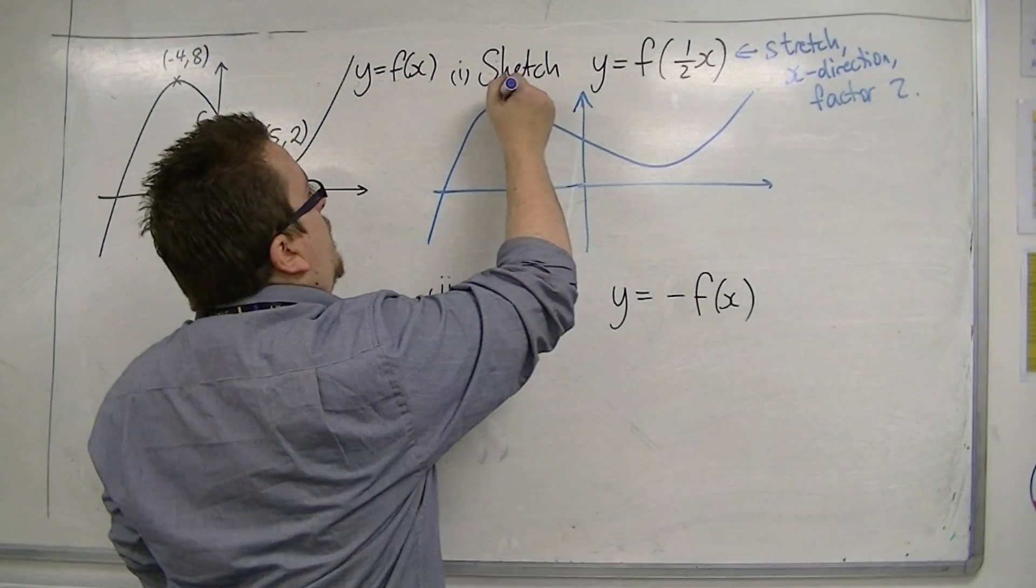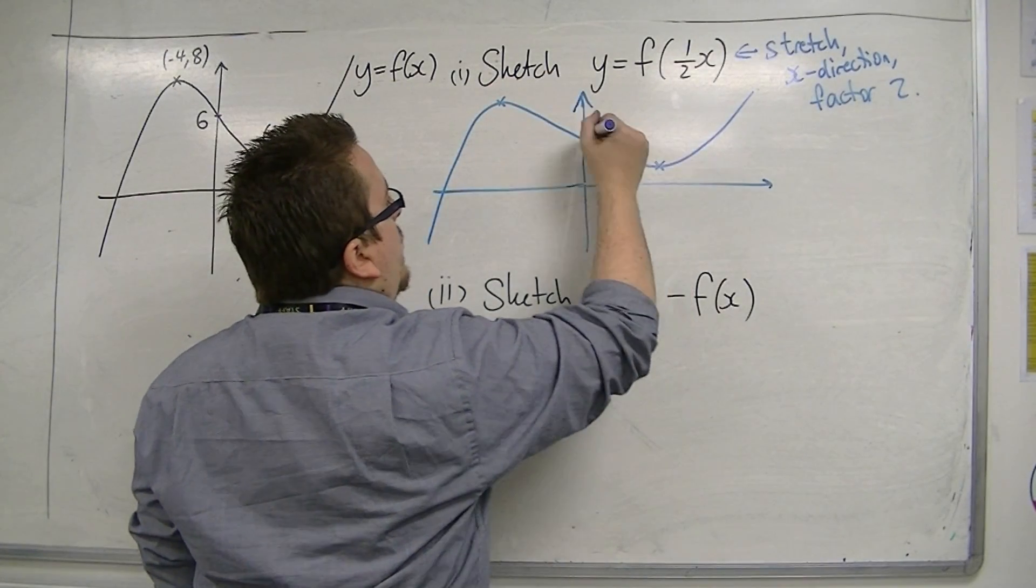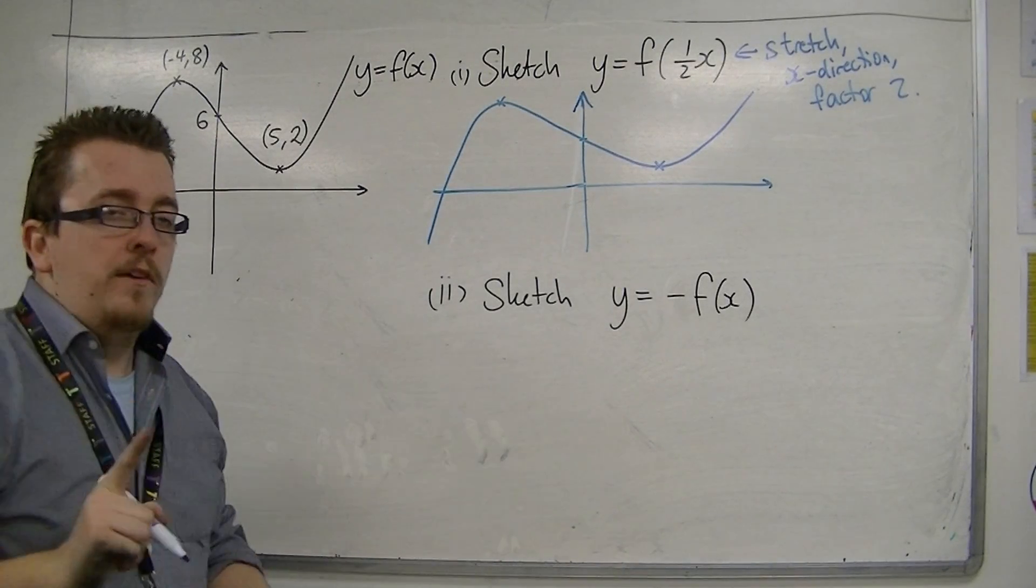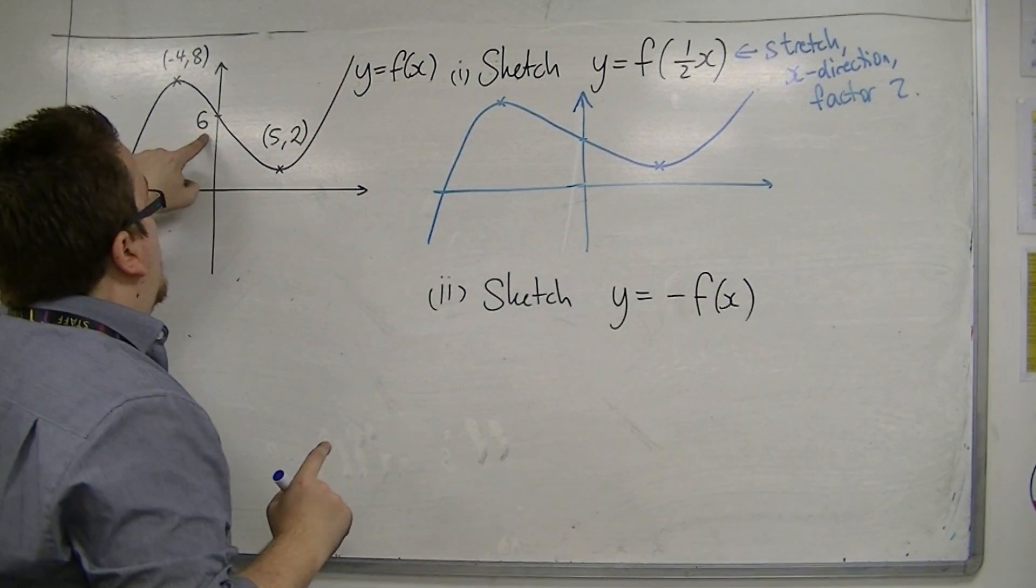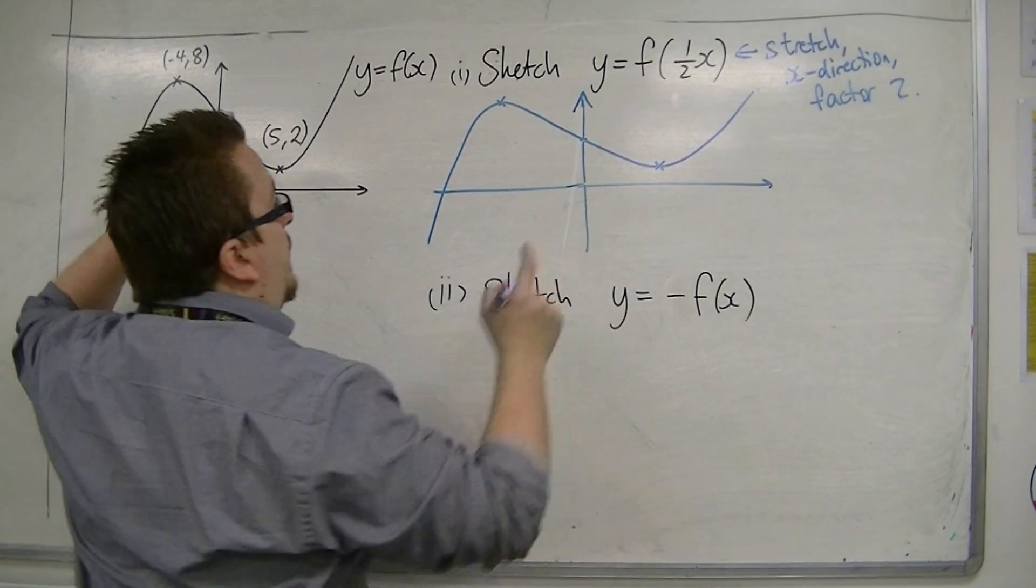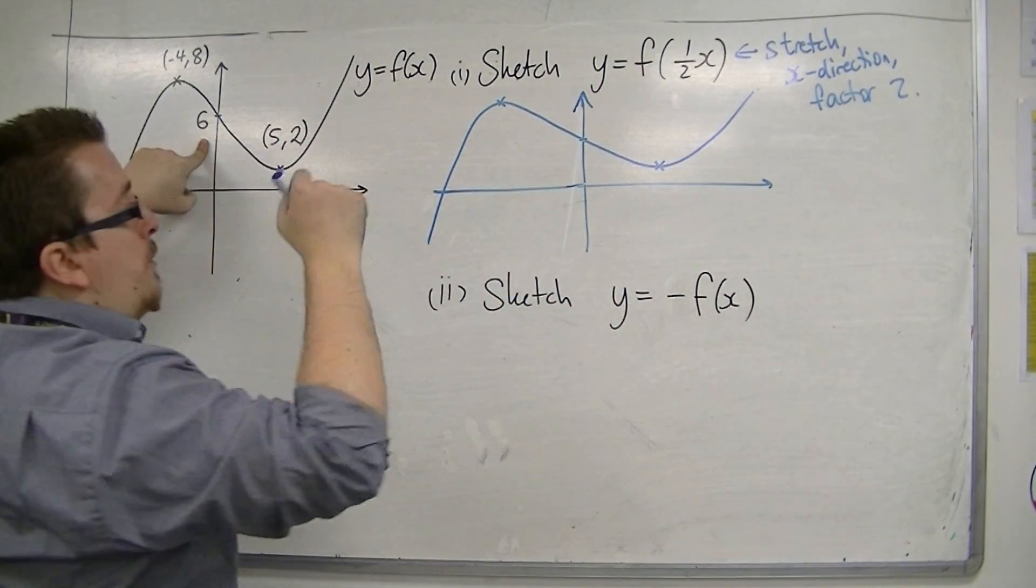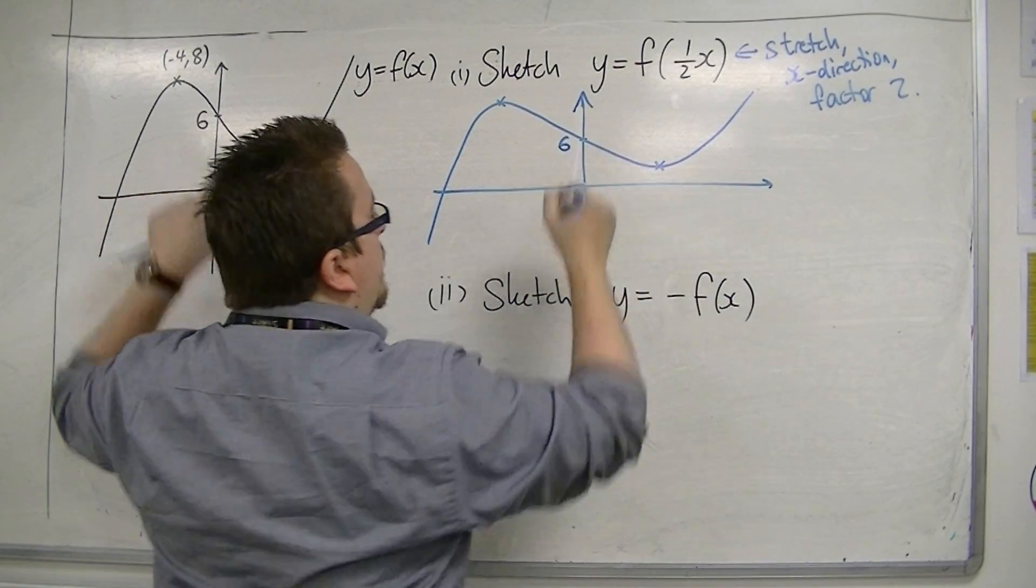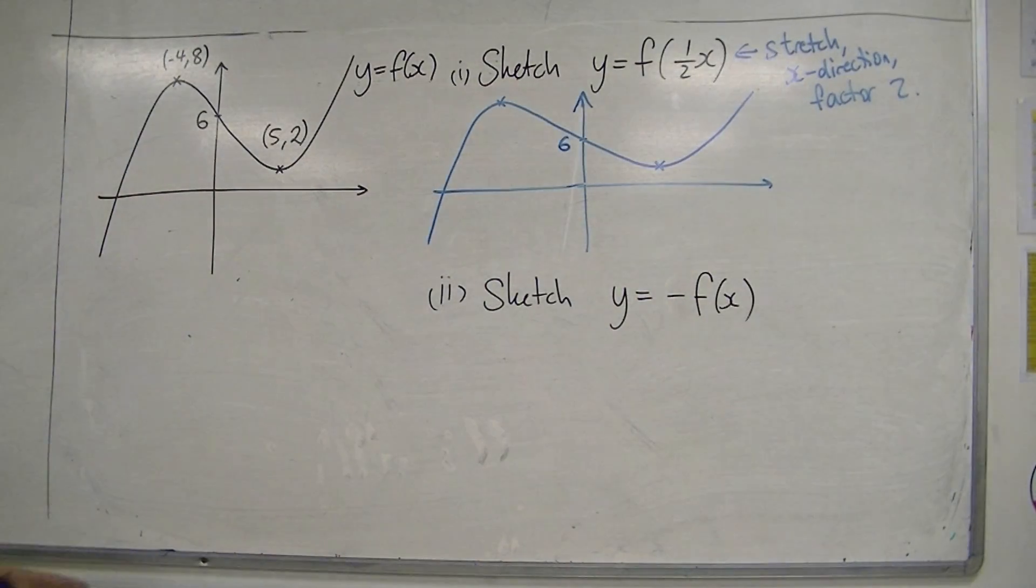Now, it's very important that you identify the three points that have been identified on the original curve. So that point on the y-axis, 6, well, that was point 0, 6. And because it's only the x-coordinates that have been altered, that is still 6.